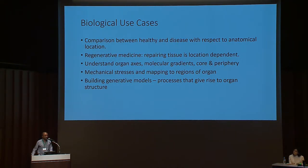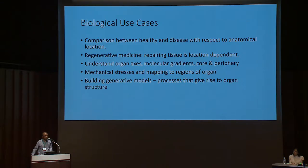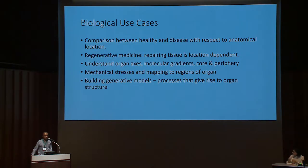They started by asking: if we do build common coordinate frameworks, what biological questions could be answered? Several themes emerged: comparisons between healthy and disease with respect to anatomical location; usefulness in regenerative medicine to repair tissue at specific places within an organ; understanding axes in organ development, molecular gradients, differences between core and periphery; understanding how differences in mechanical stress are mapped to various regions; and building generative models of organ structure from molecular information.